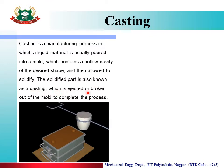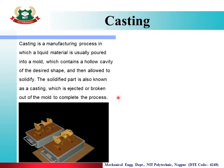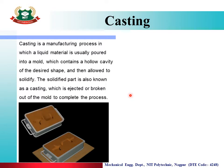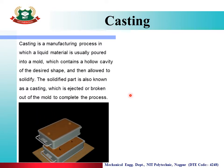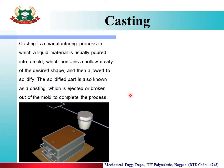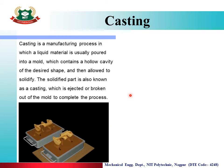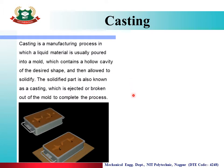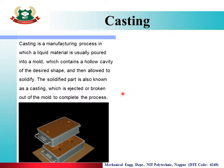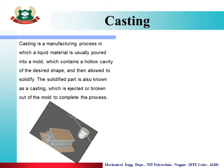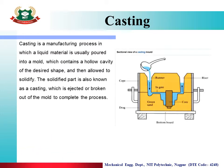The solidified part is ejected or broken out of the mold to complete the process. So this is casting — we have a material, we give it a shape, and the result is called a casting product.